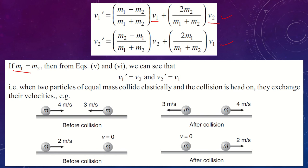For example, two identical balls of mass m moving at 4 m/s and 3 m/s will exchange velocities after collision: the first ball moves at 3 m/s and the second at 4 m/s. If the second ball is at rest and the first moves at 2 m/s, after collision the first ball stops and the second takes the velocity of 2 m/s.